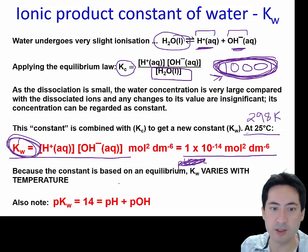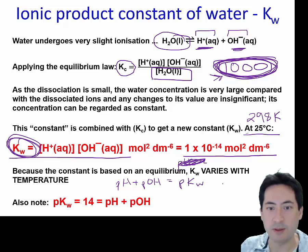And so pH plus pOH gives us the pKW which is 14. All right, so we can use that to interchange between pHs and pOHs.